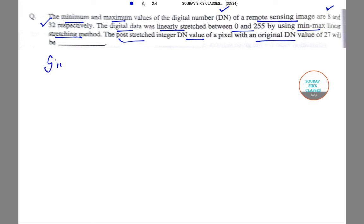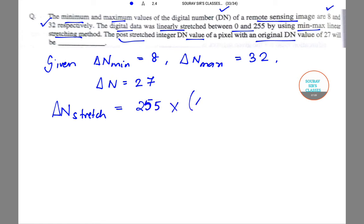It is given that DN_min is 8, DN_max is 32, and DN itself is 27. We know that DN_stretch equals (DN - DN_min) divided by (DN_max - DN_min) times 255.